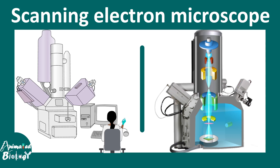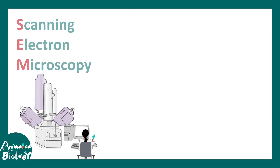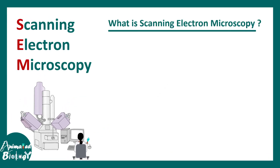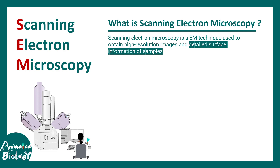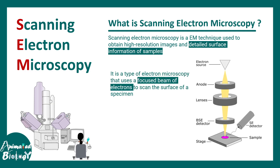In this quick video we'll talk about the concepts of the scanning electron microscope or SEM. SEM is an important microscopy technique used to obtain high resolution images and detailed surface topology information of a sample. It is a type of microscopy that uses a focused beam of electrons instead of light to scan the surface of a specimen — it could be a biological as well as non-biological sample.